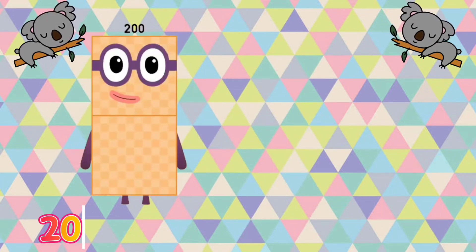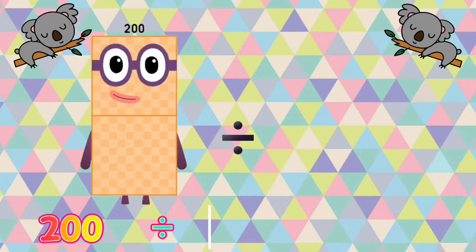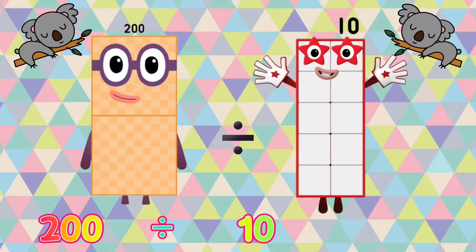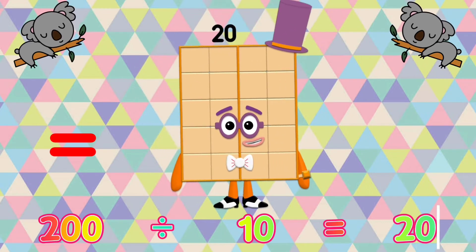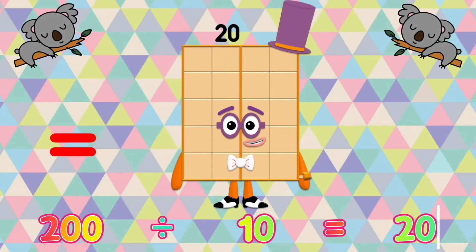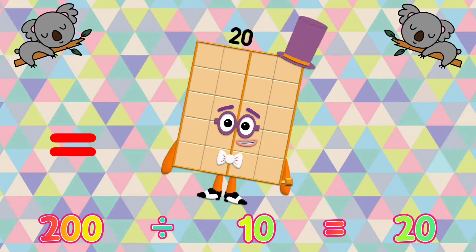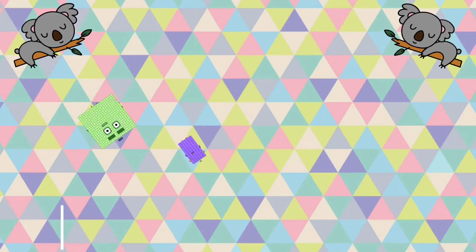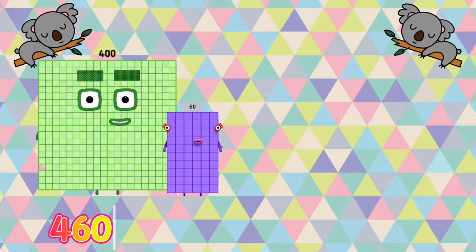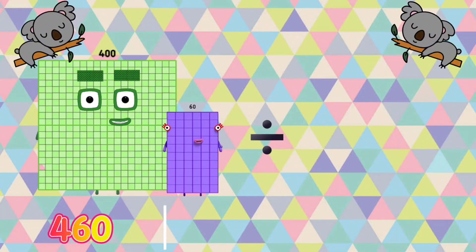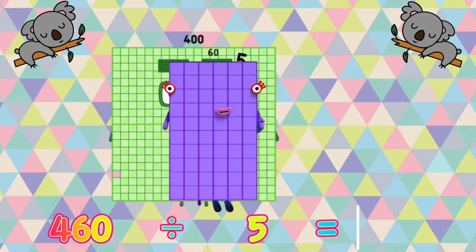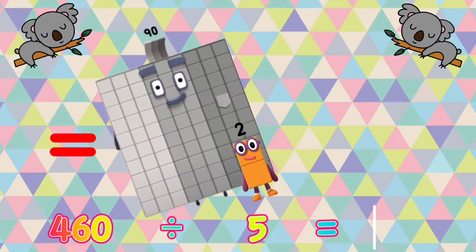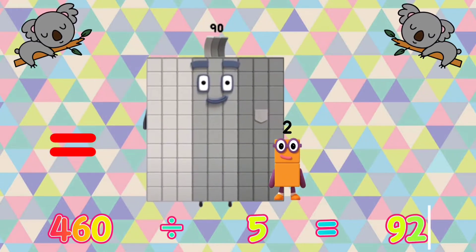200 divided by 10 is equals to 20. 460 divided by 5 is equals to 92.